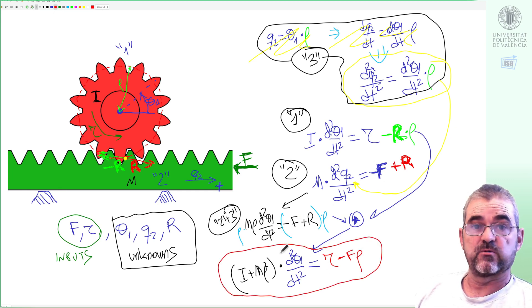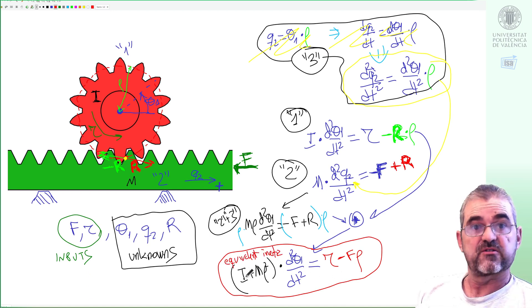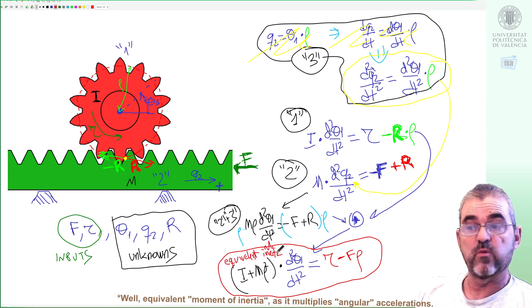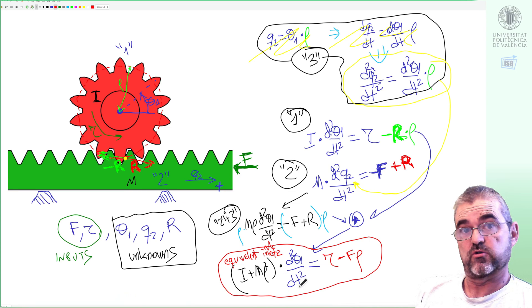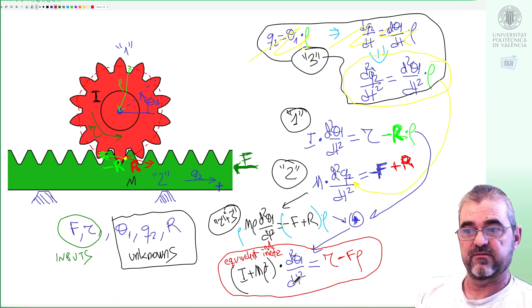So this is what is called the equivalent mechanical model as viewed from the rotation side from the red body. This is the equivalent moment of inertia because it's what multiplies acceleration. But in control we are used to writing this in normalized form, so instead of a second order derivative.